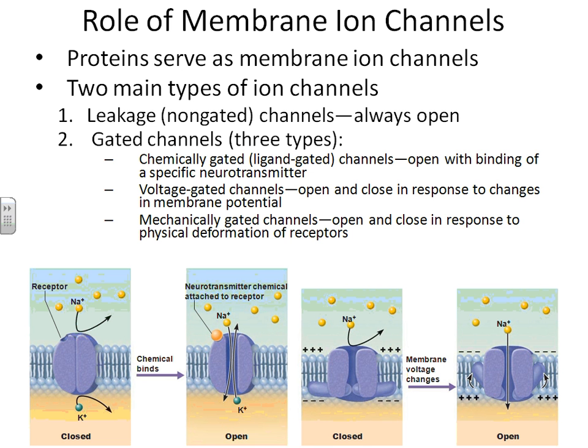There is one major type of ion channel that we consider always open. These are called leakage channels. There are sodium-leak channels and potassium-leak channels on the membrane of every cell in your body. They are more important now that we're talking about neurons — nervous system cells.